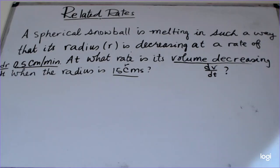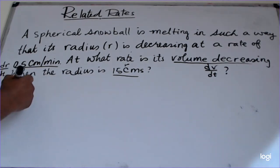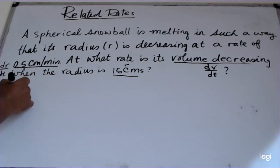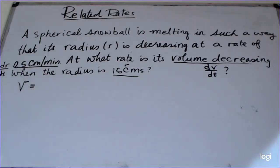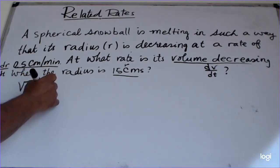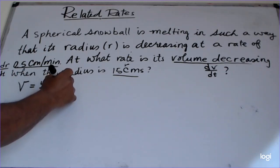In related rates when we give you a question like this, what we do is we have to identify what are the given quantities, and we have to also identify what is the required or the unknown, and then of course figure out a formula that relates the quantities. In this case the quantity that is required is dV/dt. We also know that the volume of a sphere is V equals 4/3 π r³.